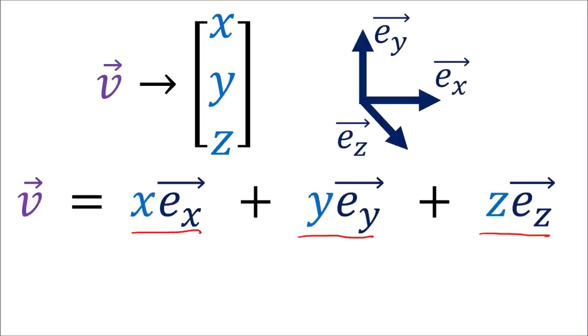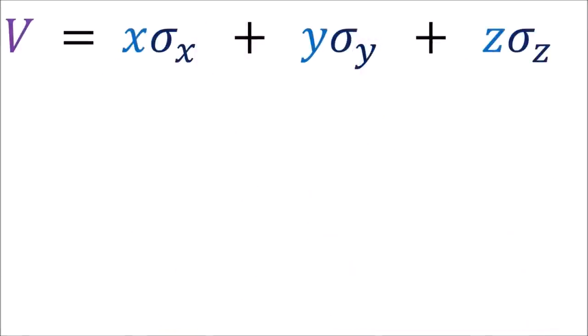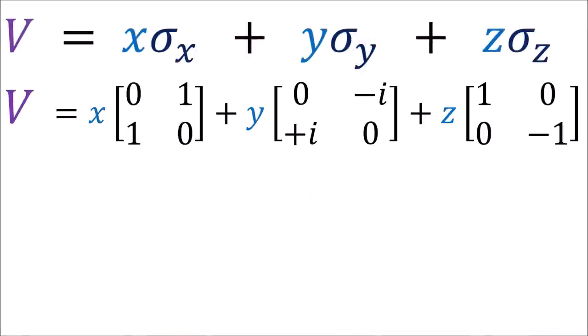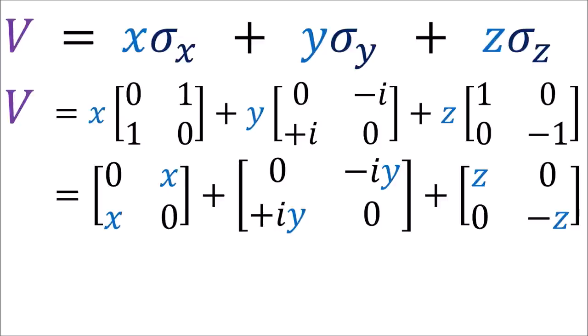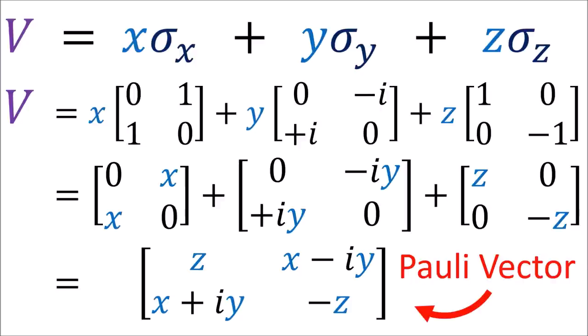What we're going to do now is replace the basis vectors with the three sigma matrices, so that we now have a linear combination of the sigma matrices. If we write the matrices explicitly, multiply in the components, and add them together, we get this 2x2 matrix.